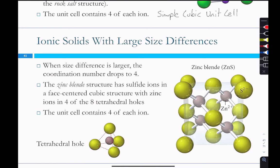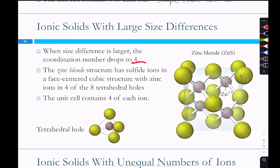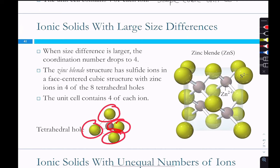For ionic solids with even larger size differences, the coordination number drops to four. This is called the zinc blende structure. The sulfur ions form tetrahedra, and within each tetrahedral arrangement of sulfur ions there's a zinc that fits into the hole in the middle — just like methane, where carbon is in the middle and four hydrogens are at the corners. That same shape occurs here with zinc and sulfur in a crystal lattice.